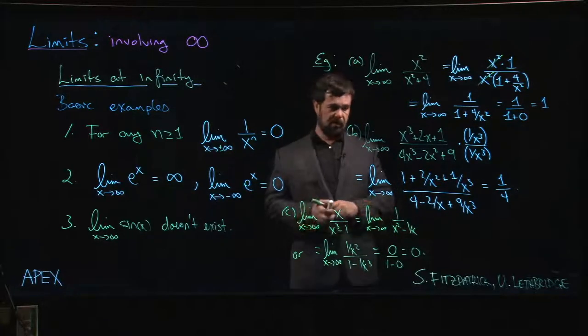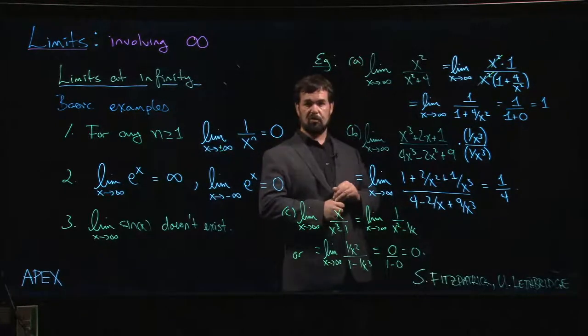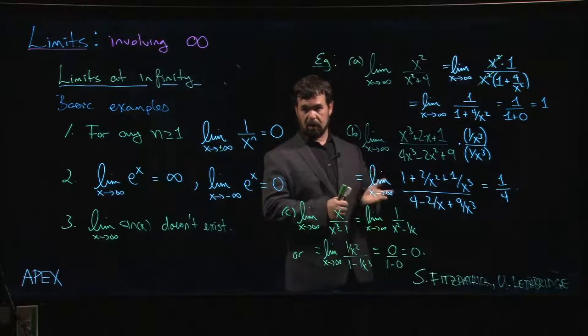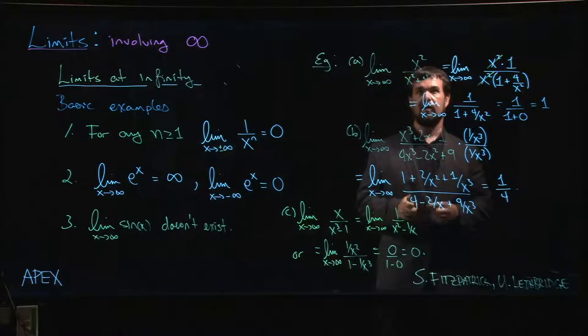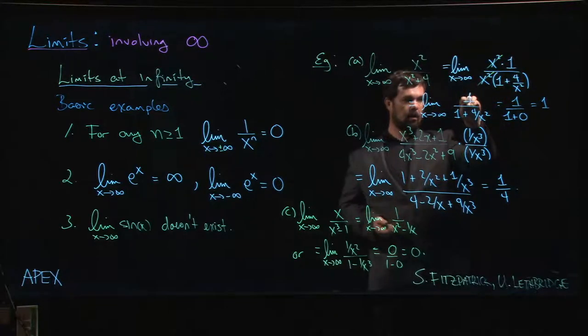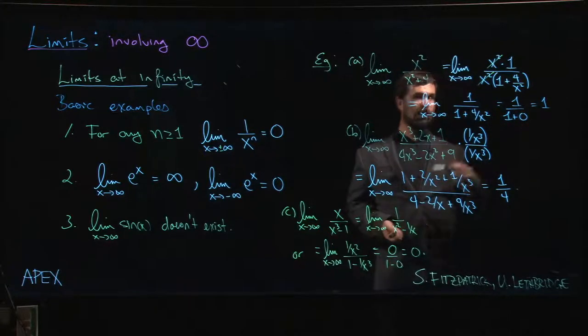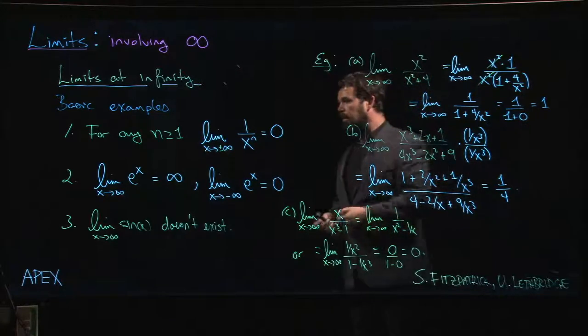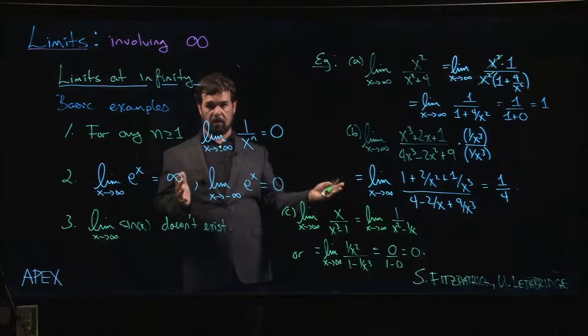The one that we didn't do, and the one that we probably shouldn't try to squeeze into this video because we don't want to get too long, is what if the degree is bigger in the numerator? So what if I had, say, like an x cubed up here? Well, if I had an x cubed up top, then I would still have an x in the numerator here. So then I would have x over something which is roughly one. X is going to infinity, then the limit is going to be infinite.